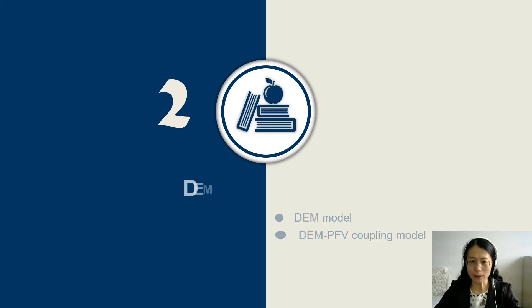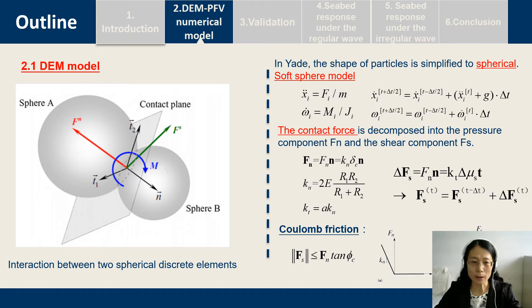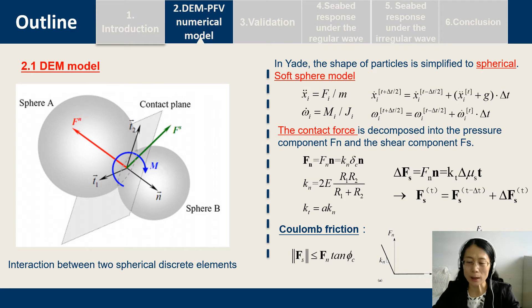The second part is the DEM pore fluid coupling model. Here is the DEM model. In this model, the shape of each particle is simplified to a sphere, using the soft sphere model. The contact force is decomposed into the normal component and the tangential component.